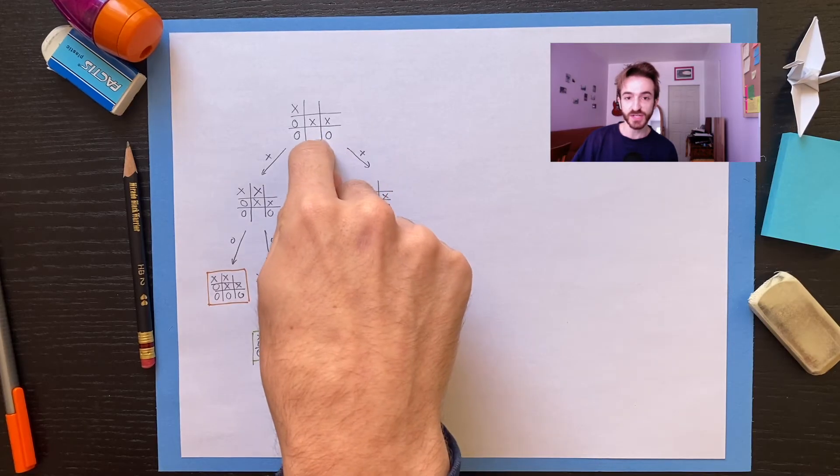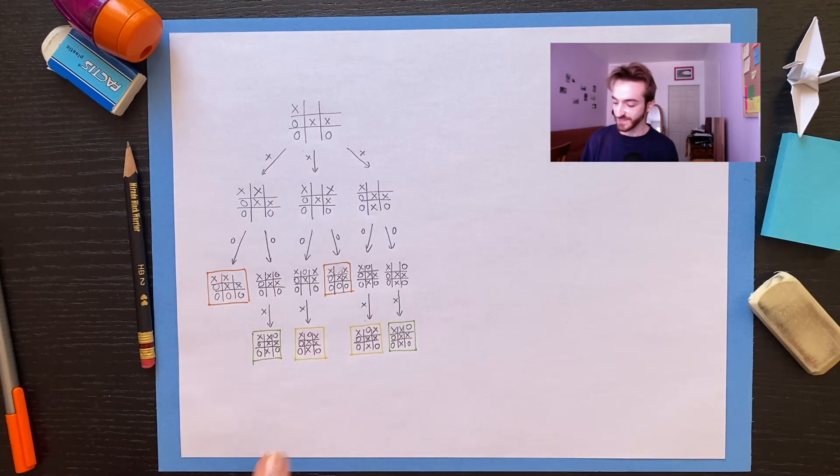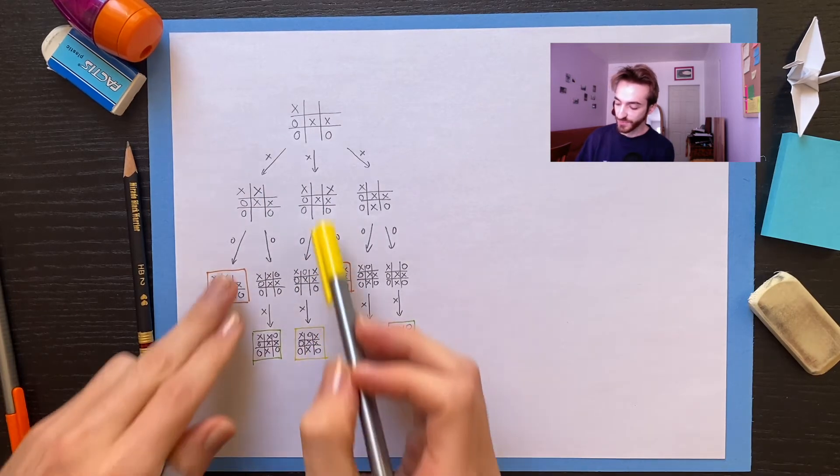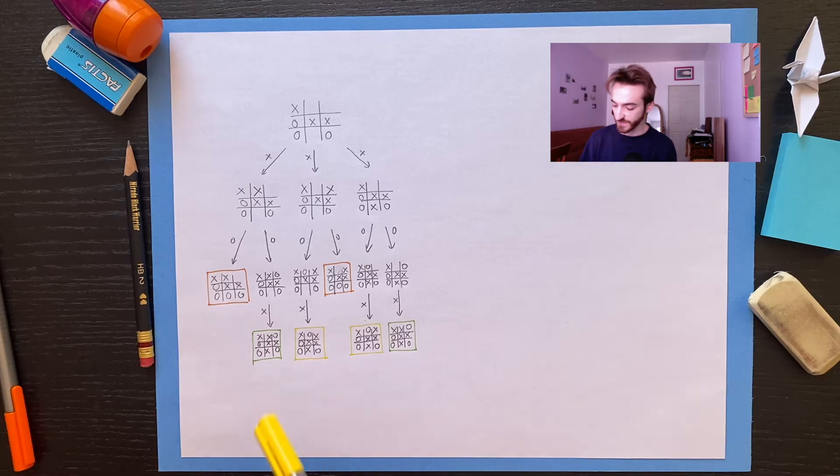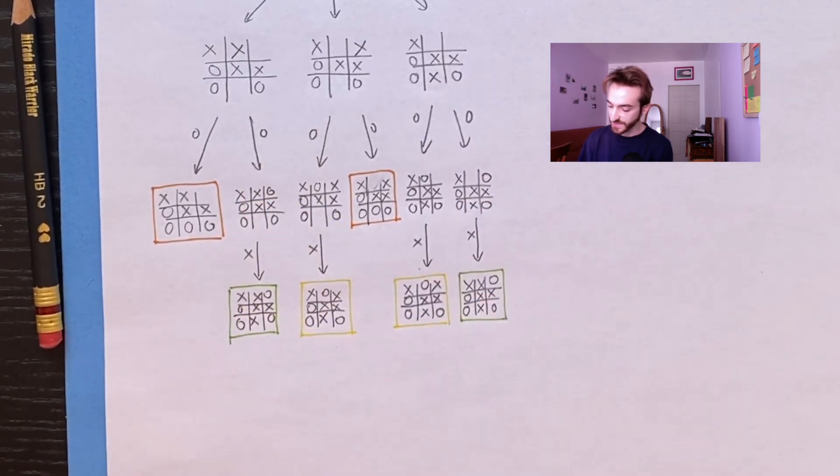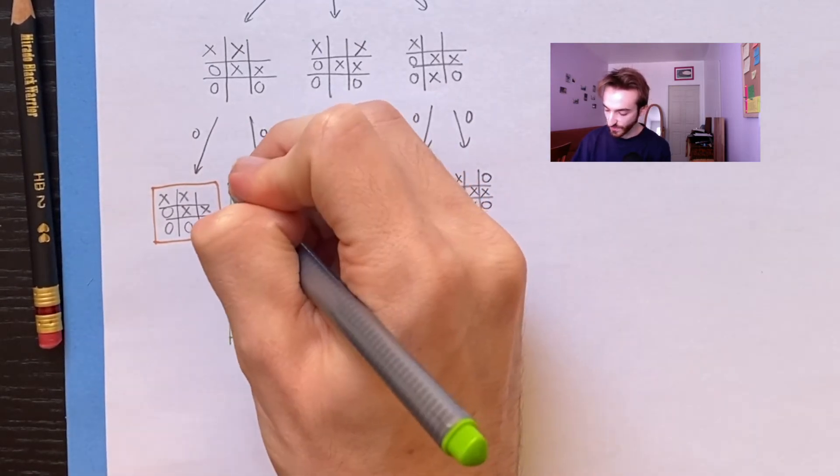So this is the full game tree from this starting position. Now, what does a computer do? How does it figure out what to do next as X? Well, it just goes up through the tree and tries to color in every position to decide whether it's a win for X, a win for O, or a forced draw with best play. So let's see what that looks like. Here, well, obviously, X only has one move, and it's a win for X. So this position here is certainly a win for X.